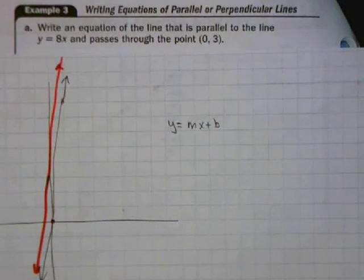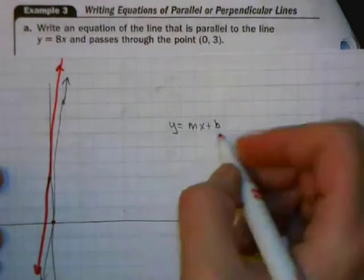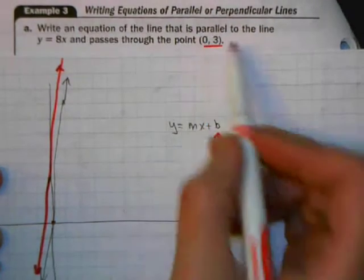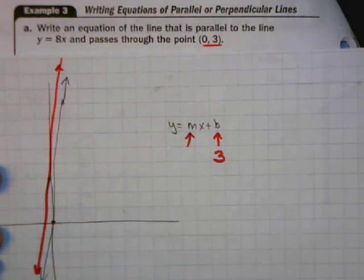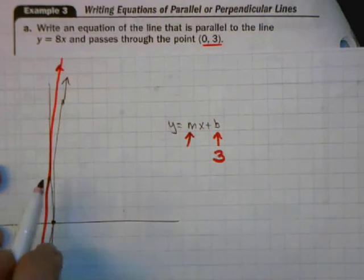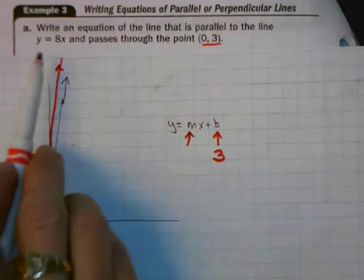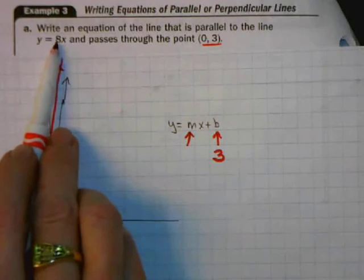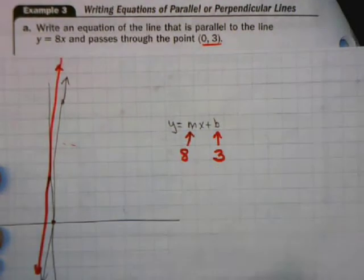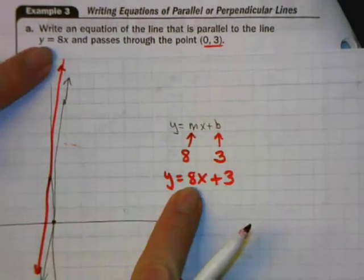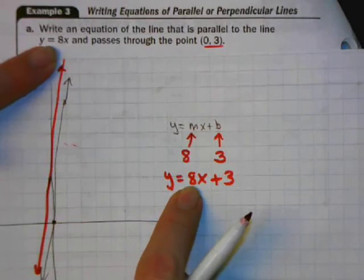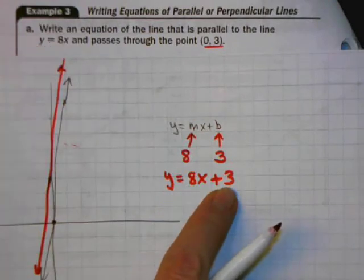What's the equation of the red line? Do I know its y-intercept? Sure — the problem tells me its y-intercept is 3, so b is 3. Do I know the slope? Well, if two lines are parallel to each other, they have the same slope. So if the red line is parallel to the black line, the slope of the red line is the same as the black line's slope of 8. So the equation of the red line is y equals 8x plus 3. These two lines are parallel because they have the same slope, and the red line passes through (0, 3) — its y-intercept.